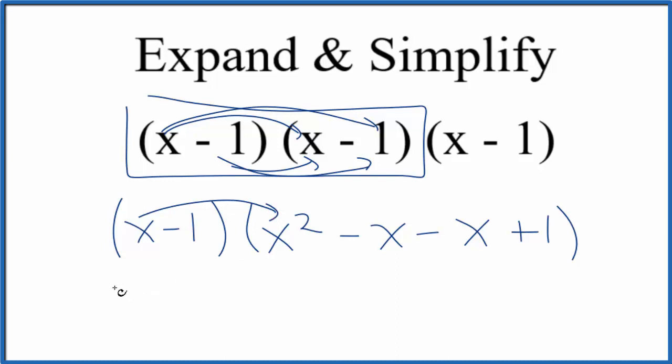x times x squared, that'll give us x to the third. Then we have x times negative x, that'll give us negative x to the second. We have x times negative x again, so negative x to the second. And then we have x times 1, that gives us x.